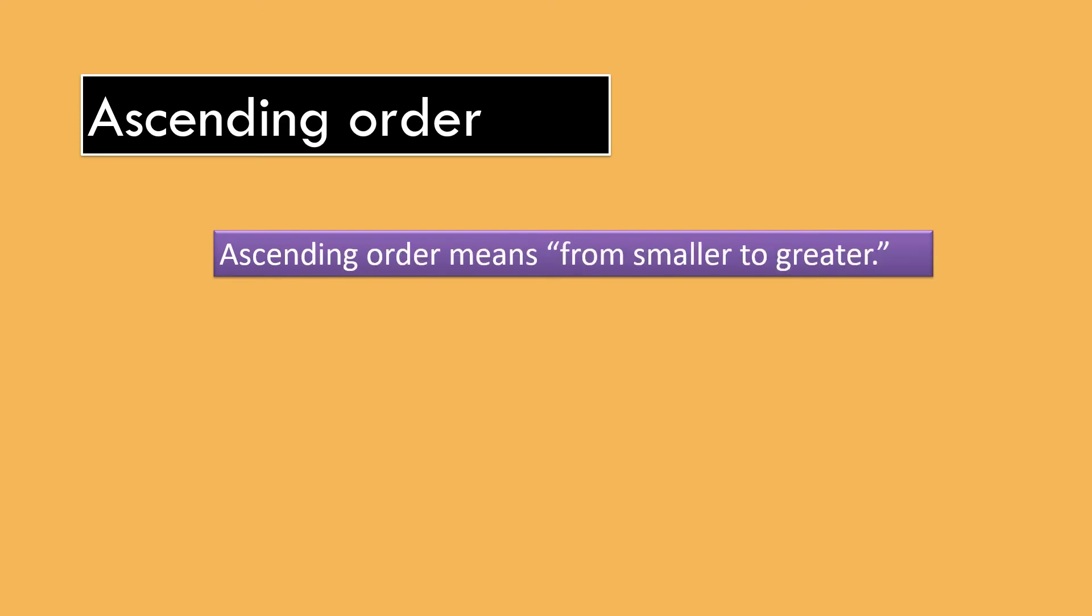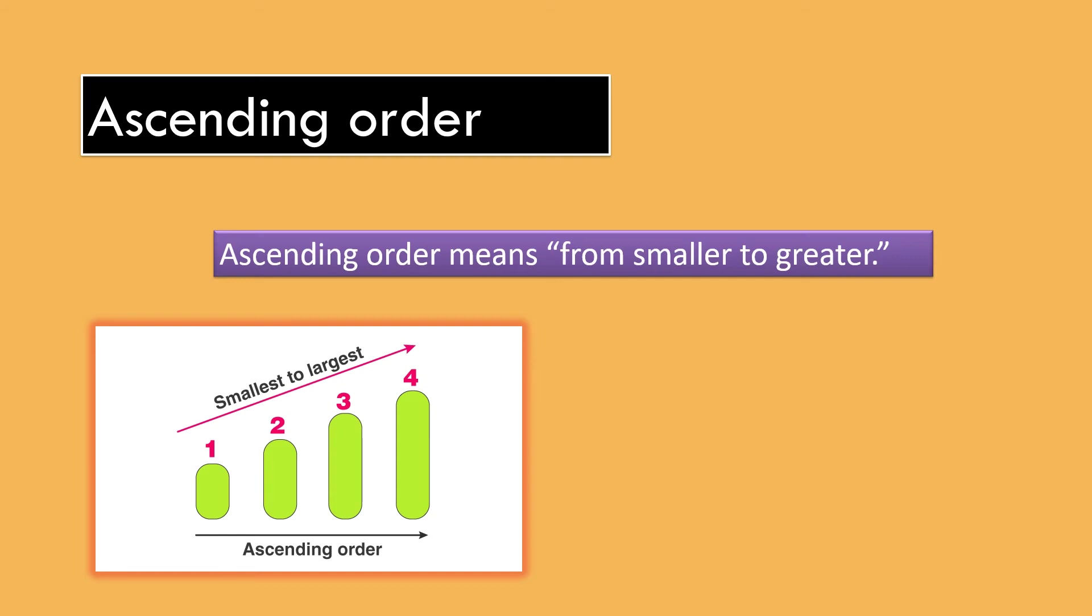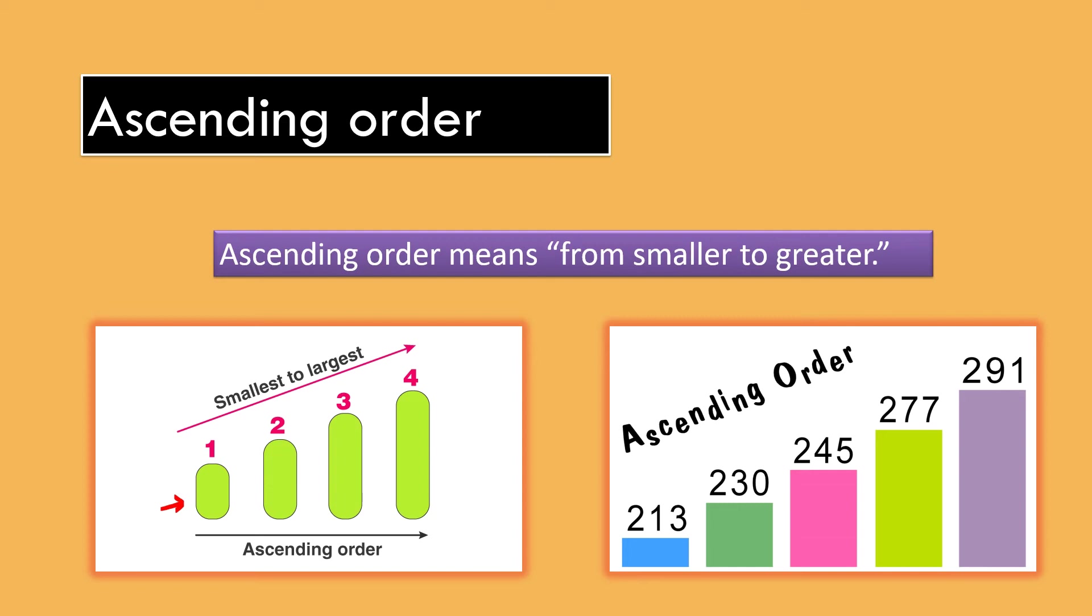Next is Ascending order. Ascending order means from smaller to greater. It means the smallest number will come first in a row. For example, numbers 213, 230, 245, 277, 291 are arranged in ascending order.